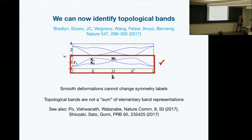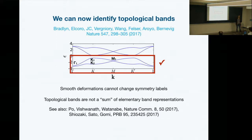There are some subtleties here. You can have topological phases without crystal symmetry — you can have a Chern insulator without any symmetry at all — so we can't identify all topological phases this way. And even more subtly, you might have two different sets of bands which have all the same symmetry labels but still differ by some non-trivial topological index. So this isn't a complete way to diagnose all topological phases, but it does give us some unifying principle.